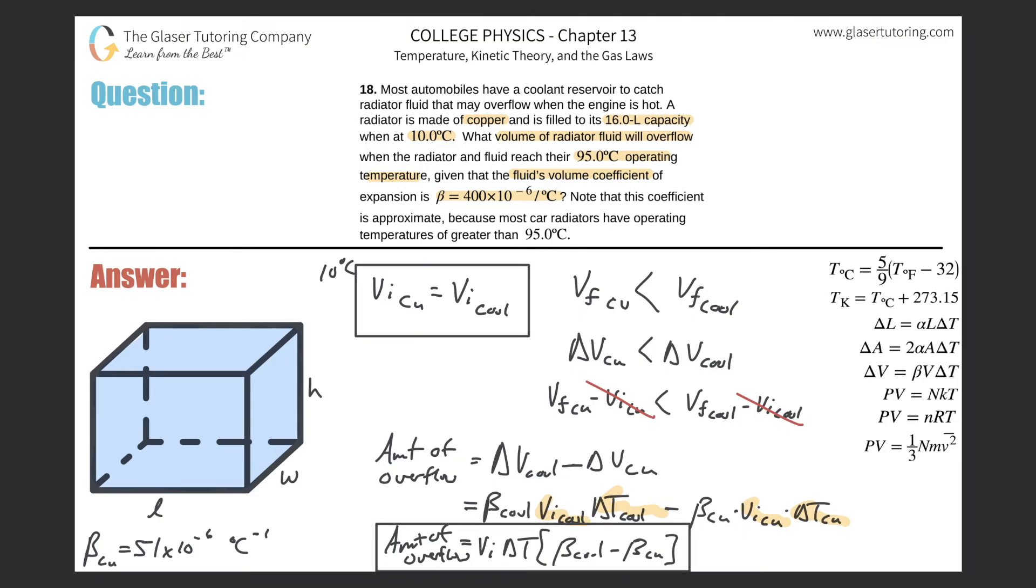All you got to do is now plug in the values. So there's going to be the initial volume and you can leave this in terms of liters. That's fine. I'm just going to leave it in terms of liters. So the initial volume here was 16 liters. The change in temperature was 95 minus 10. And then the betas now are going to be the coolant value, which they told us in the problem was 400 times 10 to the minus six, then minus the beta of copper, which I wrote down over here, 51 times 10 to the minus six.